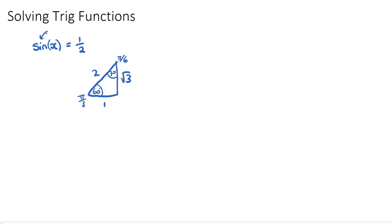Sine is opposite over hypotenuse. So what we want to do is think about sine of what angle. We want to be looking at the angles in our triangle, sine of what angle is going to be 1 over 2.